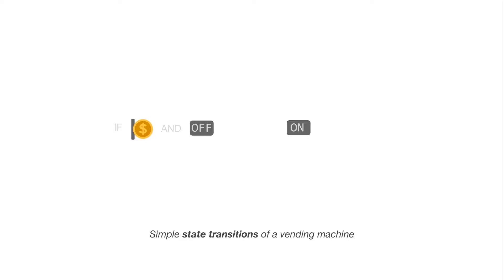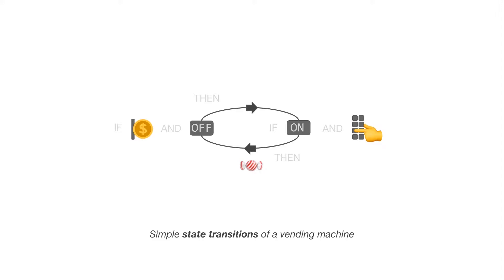There are two inputs that could affect its state: inserting a coin and pushing a button. Putting in a coin in the OFF state shifts the state from OFF to ON. If somebody gives a push input in the ON state, the customer would receive their candy and the state would switch back to OFF. If this vending machine was using smart contracts, every time a state transition is made, it would have to be updated on the entire network and a fee would be charged.